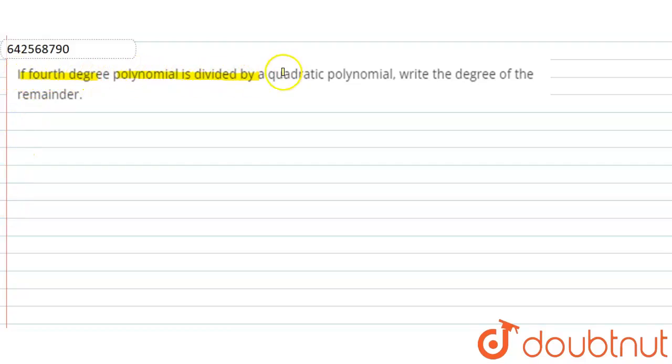So according to the given information in the question, we have a fourth degree polynomial. If we take a polynomial F of x, then the degree of F of x is equal to 4.